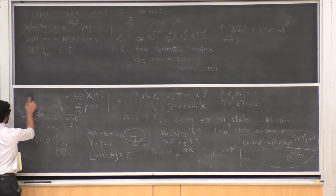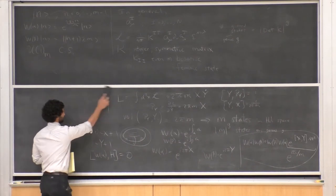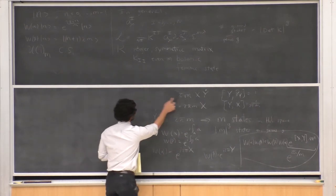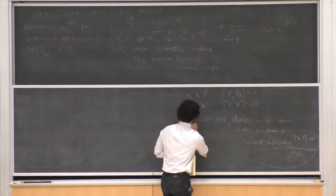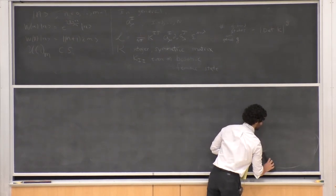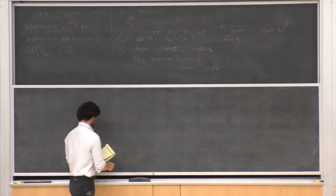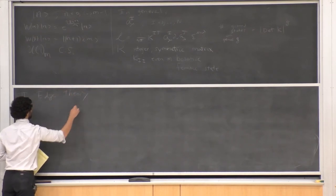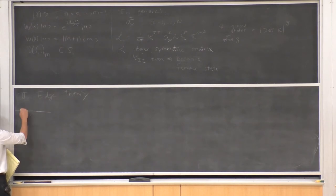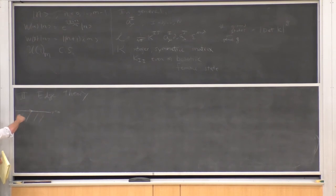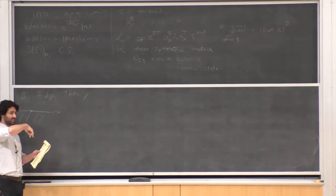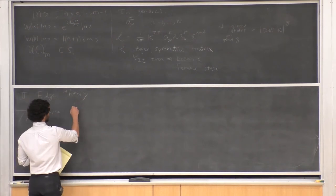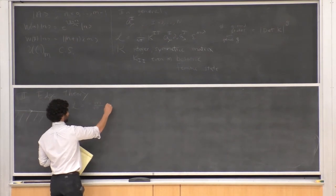Now I want to discuss the edge theory of systems described by Chern-Simons theory. If you put a fractional quantum Hall state on a system with a boundary, you find a chiral edge mode. This has come up in previous lectures — you can think of it as the semi-classical skipping orbits of electrons undergoing cyclotron motion. In Chern-Simons theory, you can also see directly that there must be chiral edge modes.